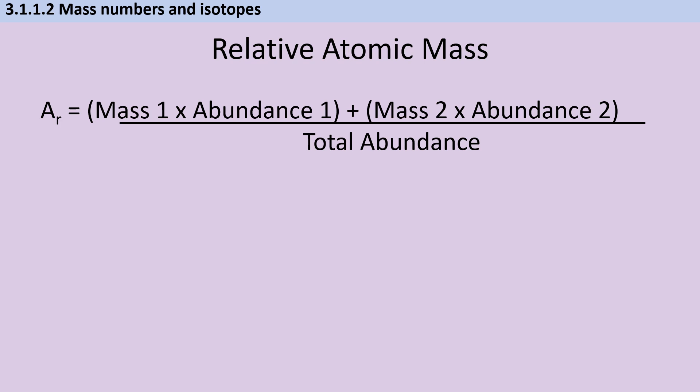So we've looked at an example where you might be given the percentage abundance of one isotope but not the other. But what if you're given neither? Well, we know that the total relative abundances must add together to make 100. So if we call one of them X, then the other one must be 100 take X, assuming there's only two of them.